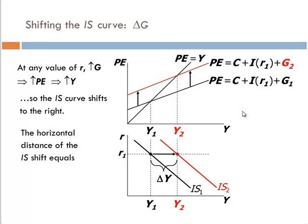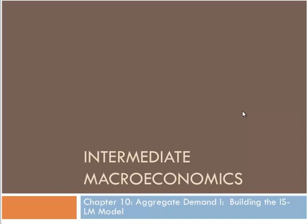The horizontal distance of the IS curve shift is equal to the increase in equilibrium output, and that change is the government spending multiplier times the change in government spending.